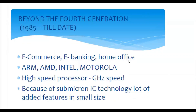Beyond the fourth generation, from 1985 to date, they introduced e-commerce, e-banking, home office computing, and high-speed processors from ARM, AMD, Intel, and Motorola reaching gigahertz speeds due to sub-micron IC technology. AMD is partnering with ARM to develop a broader ecosystem for data center environments. Based on research, the AMD 64-core Ryzen Threadripper desktop processor with 128 threads is considered the world's fastest CPU as of 2021.